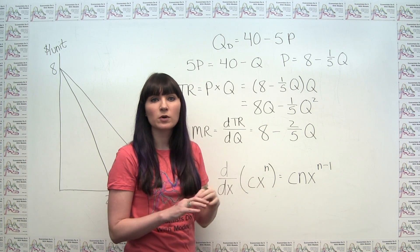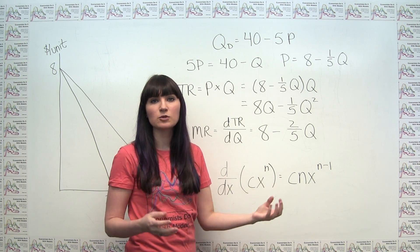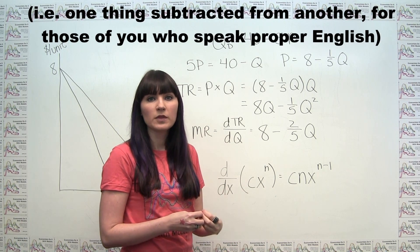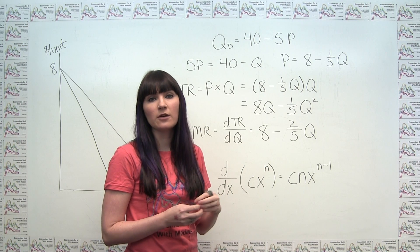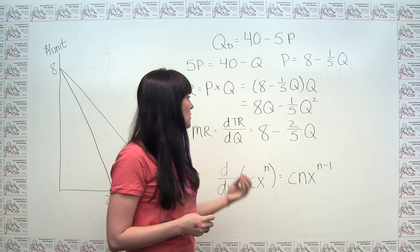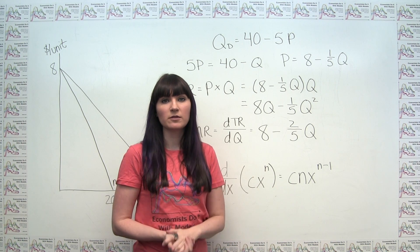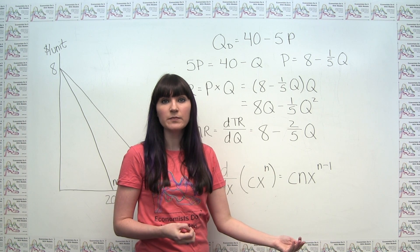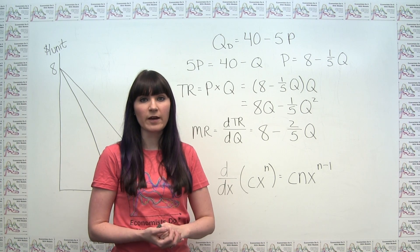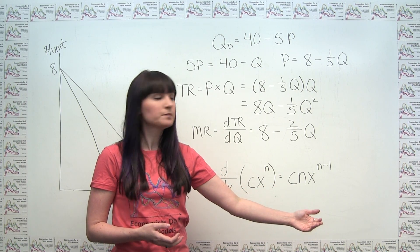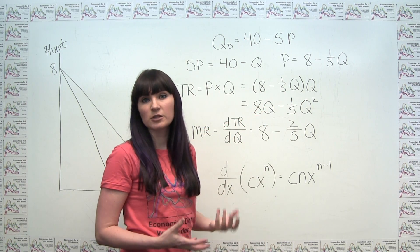Derivatives also work such that if you have two things added or subtracted together, the derivative is just the addition or subtraction of those component parts. The derivative of a plus b equals the derivative of a plus the derivative of b, and similarly for subtraction. So we can take each part independently and then subtract them.